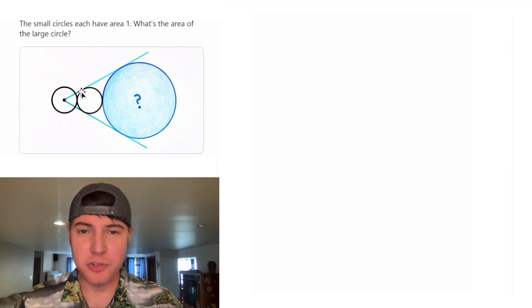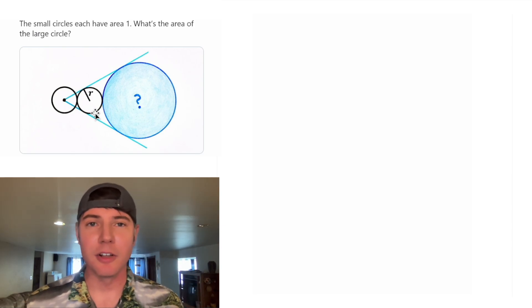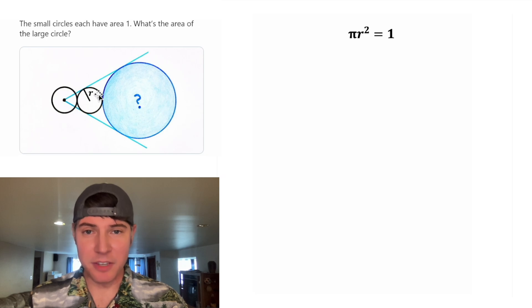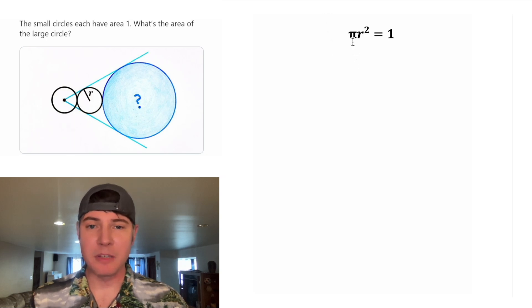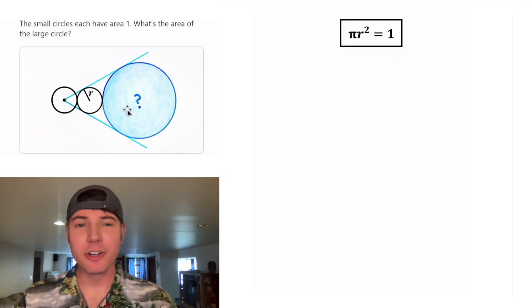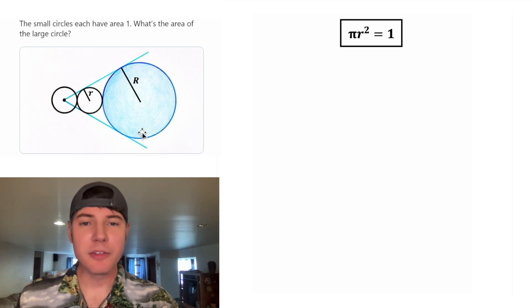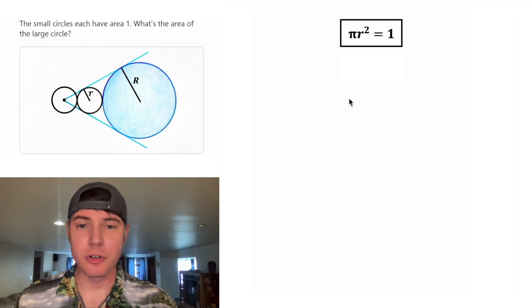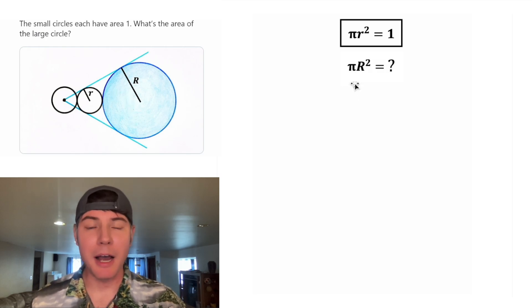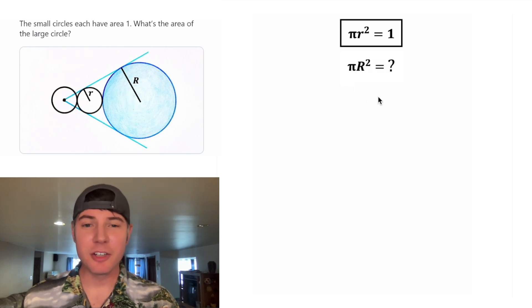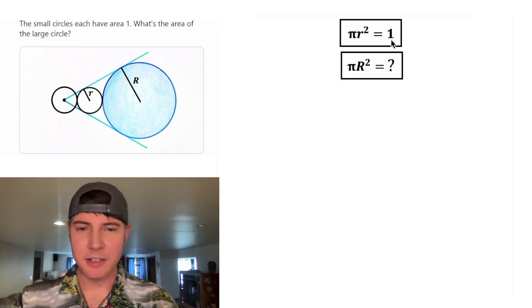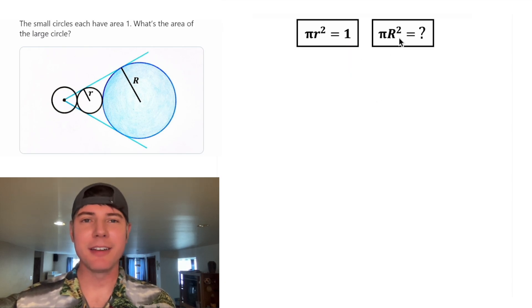First, from this tangent line, let's draw this radius and call it little r. And we're given that the area of this circle is one, so that means pi little r squared will be equal to one. This looks important, let's put a box around it. And now for the larger circle, let's get rid of the question mark and let's draw the radius here that touches the tangent line and call it big R. Since we're trying to find out what is the area of this larger circle, we ultimately wanna know what is pi big R squared. And this is also important, let's put a box around it. And to save room, let's put these side by side.